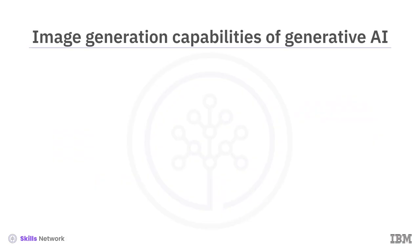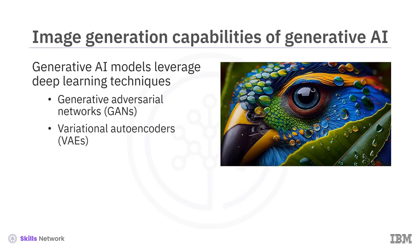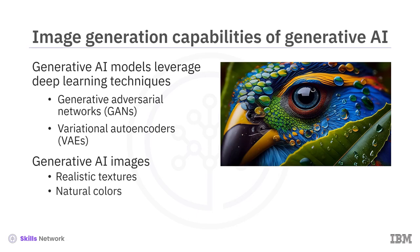Generative models can generate high-quality, convincing images based on deep learning techniques, such as generative adversarial networks, or GANs, and variational auto-encoders, or VAEs. These generated images exhibit realistic textures, natural colors, and fine-grained details, giving the impression of a real camera capture.